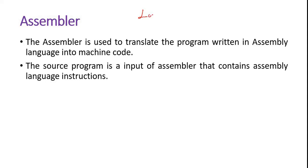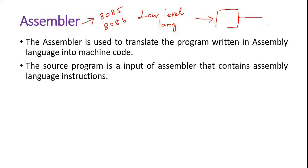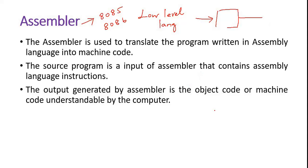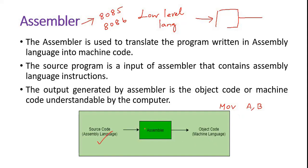Now, assembler. Assembly level language is called low level language. Examples include the 8085 microprocessor and 8086 microprocessor — they use assembly level language. These are low level languages used to do only some specific tasks. They use concepts like move A, B and registers, arithmetic logic unit, and so on. Assembler is used to convert the source code of a low level language into ones and zeros. We are not going to discuss assembler much in this course.